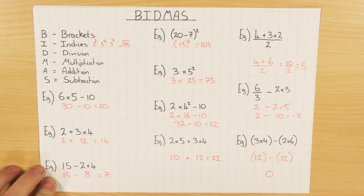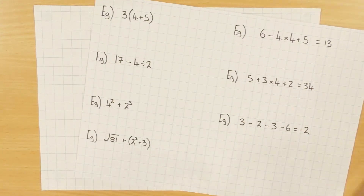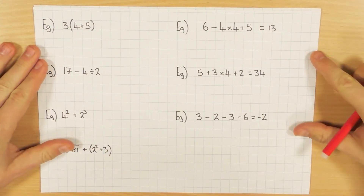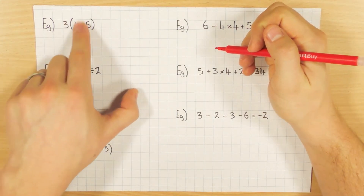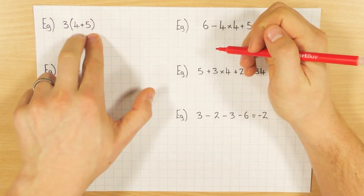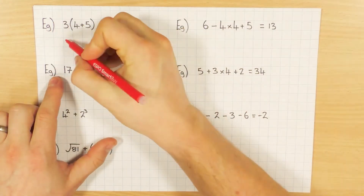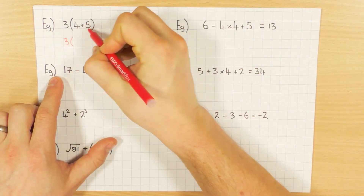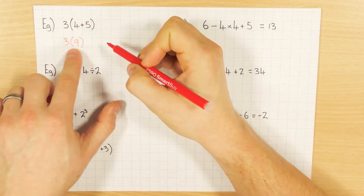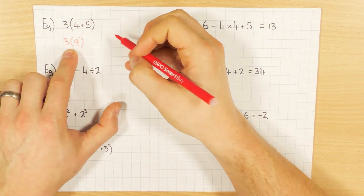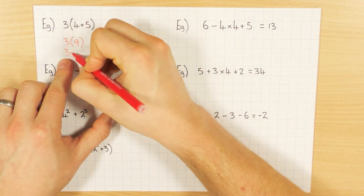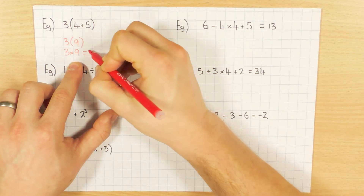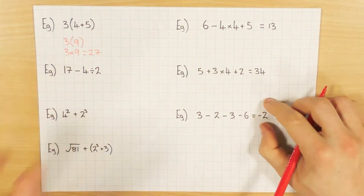Here I've got brackets and an addition, so I must do the brackets first: 4 plus 5 gives 9. Then it's just an expanding bracket, which means 3 times 9. Hopefully if you've expanded brackets before you know that means 3 times 9, which of course is 27. Whenever we're expanding brackets, we are multiplying.